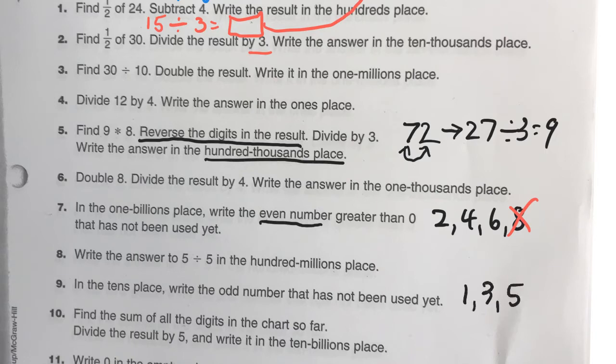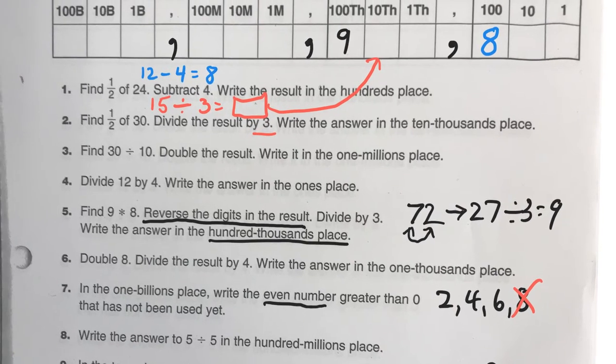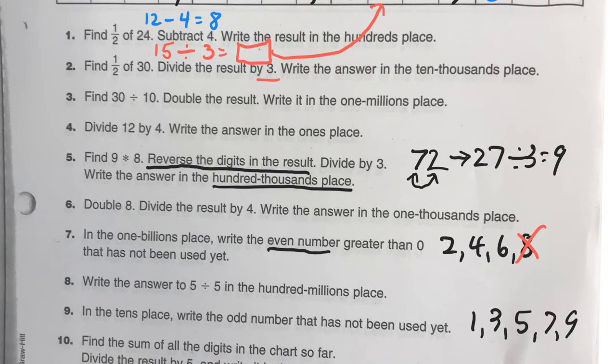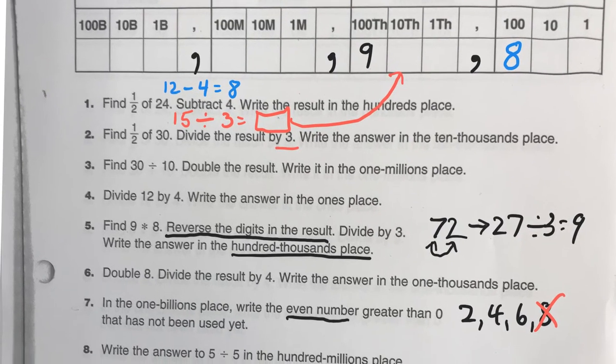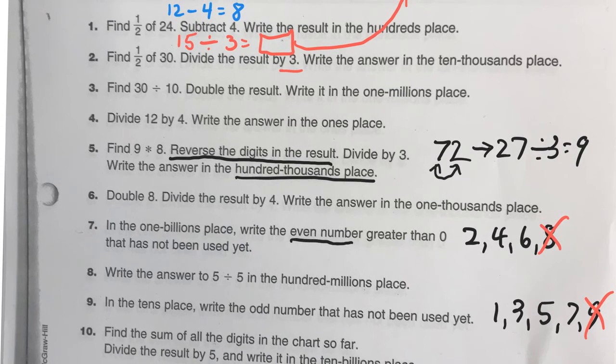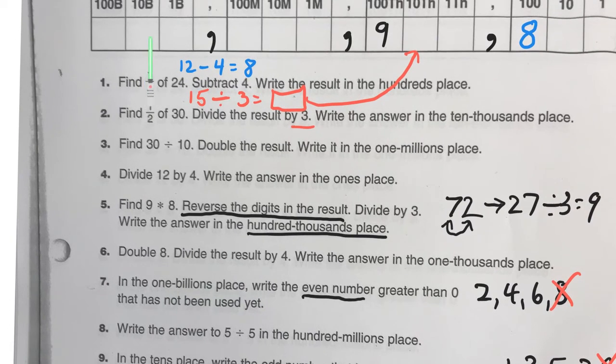So, what are your odd numbers? You have 1, 3, 5, 7, and 9. So, up here, we've already used 9. And you're going to have more answers than I have because I'm just doing partly through. So, what other odd number has not been used in your puzzle? So, that's the one that will go into the 10 billions place right there.